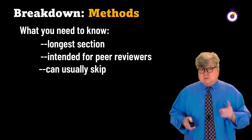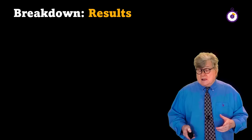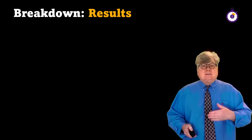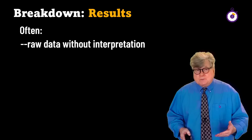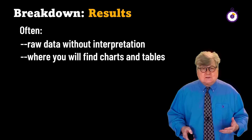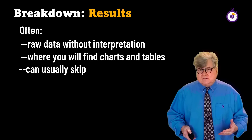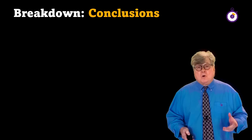After the methods section is the results section, which simply presents the data produced by the methods without interpretation. It's often presented in all those charts and tables that seem so confusing in an academic journal article. So guess what? Skip it. Skip the methods section and the results section — you want the next section.